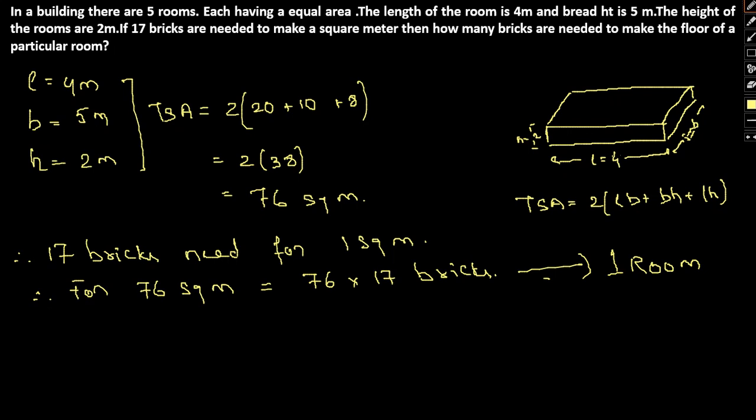It is said that there are 5 rooms in a floor. So therefore, for 5 rooms, we have 76 into 17 into 5, which comes out to be 6460 bricks. I hope this is clear. We simply used simple mensuration formulas to solve the same. Now let's move on to the next question.